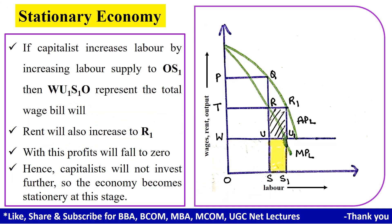The capitalists always prefer profit, so they will increase production by increasing the labor supply to OS1 from OS. The wages will also increase to WU1, so WU1S1O represents the new total wage bill. Similarly, the rent will also increase to R1.